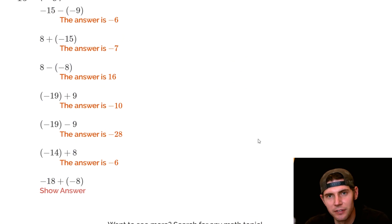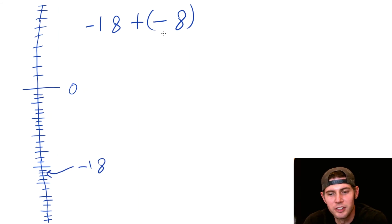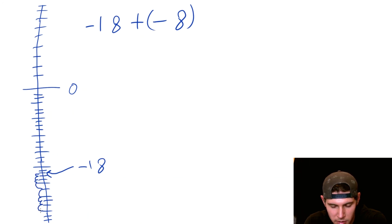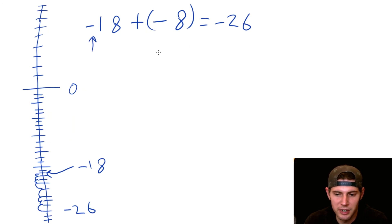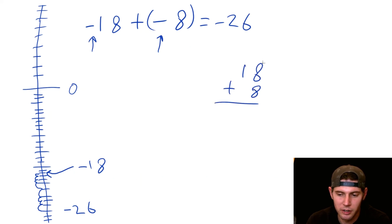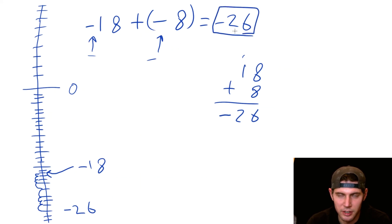Last one: negative eighteen plus negative eight. We start at negative eighteen and then plus negative eight means going down eight more. Counting gives negative twenty-six. The alternative: both are negative so they work together — eighteen plus eight is twenty-six — and since they're both negative they dig deeper together, giving negative twenty-six.